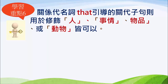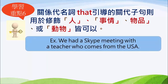而關系代名詞 that，引導的關代子句則不管先行詞是人、事物、物品或動物，關代 that 都可以用。所以我們剛剛說的 We had a Skype meeting with a teacher who comes from the USA，關系代名詞 who 也可以用關系代名詞 that，整個句子也可以說成 We had a Skype meeting with a teacher that comes from the USA.